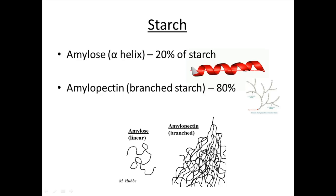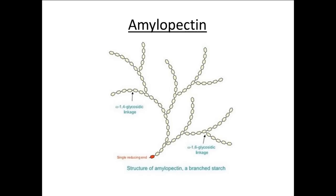Both of these types of molecules, amylose and amylopectin, have glucose as their constituent monosaccharide. This is a diagram of amylopectin and you can see that there are a number of alpha-1-4 glycosidic bonds and also alpha-1-6 glycosidic bonds.